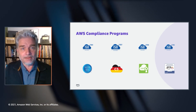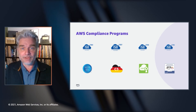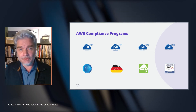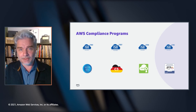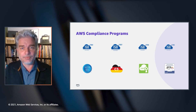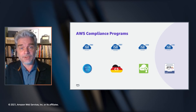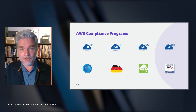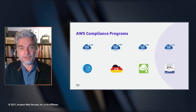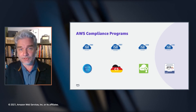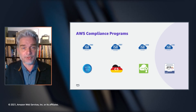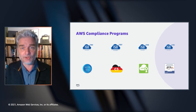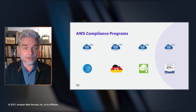And as a last example, the Cloud Infrastructure Services Providers in Europe data protection code of conduct. CISPE is a coalition of cloud computing leaders together serving millions of European customers. In collaboration with the French data protection authority, CNIL, CISPE developed the CISPE Data Protection Code of Conduct, which was approved by the European Data Protection Board as the first pan-European data protection code of conduct focused on cloud infrastructure services. This CISPE code helps customers ensure that AWS offers appropriate operational assurances to demonstrate compliance with the General Data Protection Regulation, or GDPR.